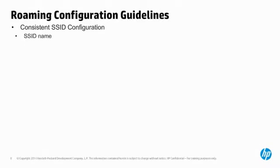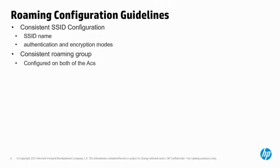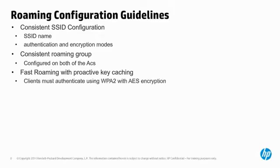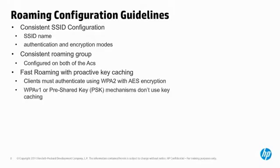When configuring inter-AC roaming, you should always be consistent with your configuration of SSIDs. Make sure that ACs are configured with the same SSID name, and that the SSIDs are configured for the same authentication methods and encryption modes. The AC must also be configured with the same roaming group. Client authentication information is proactively cached between ACs. This proactive key caching mechanism is only relevant when clients authenticate using the WPA-V2 protocol suite, which includes AES encryption. It is not relevant for clients using the older WPA-V1 protocol or pre-shared keys for authentication.